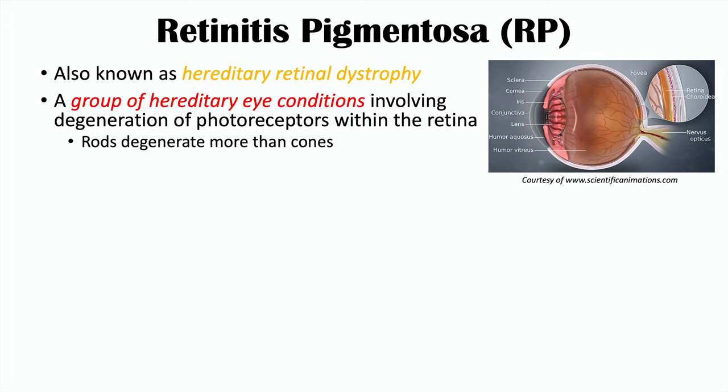The rods are involved in vision in low light or dim conditions — you can think of night vision. Cones are responsible for vision involving higher or brighter lights, and they help distinguish colors, whereas rods are not great at distinguishing colors but are better at night vision. This distinction will be important when we talk about the signs and symptoms of this condition.